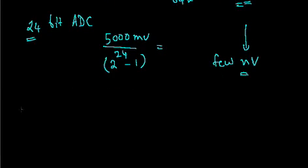So, what is the meaning? The meaning is that 24-bit ADC is the best, because even if the input changes by very small amount, it can change the digital output. This is good.